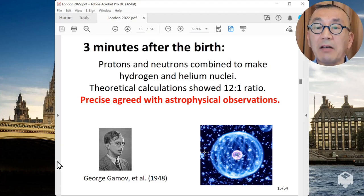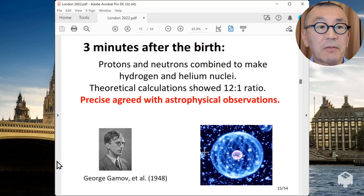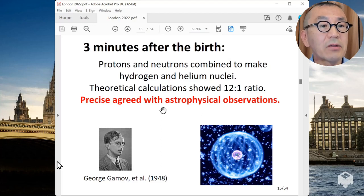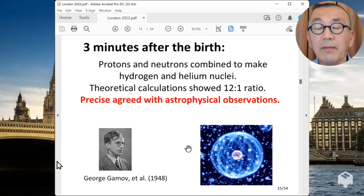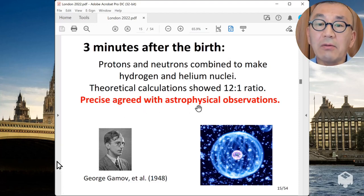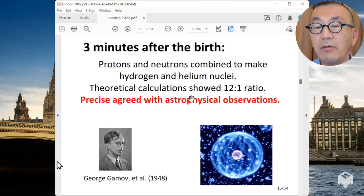Big Bang theory makes various predictions that can be tested experimentally. This is one of the first important ones: at the very beginning of the universe, the universe was very hot and dense. So that means that atoms was decomposed into elementary particles. And then around three minutes after the birth of the universe, the universe has cooled down sufficiently so that protons and neutrons combine to make hydrogen and helium nuclear. And using Big Bang theory, you can actually predict the ratio to be 12 to 1. This calculation was done by George Gamow and his collaborator immediately after the World War II. And their prediction agreed precisely with our current astrophysical observation about the ratio of hydrogen and helium. So this is actually very strong evidence for the Big Bang theory.